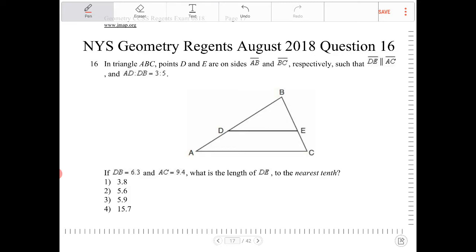So DE is parallel to AC, so immediately I know that triangle DBE will be similar to triangle ABC.